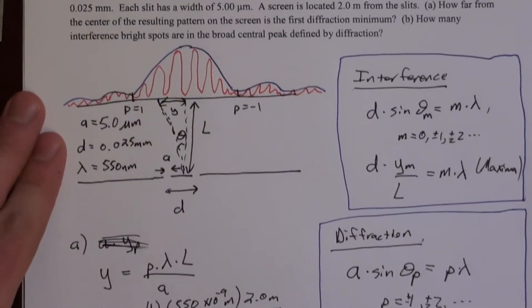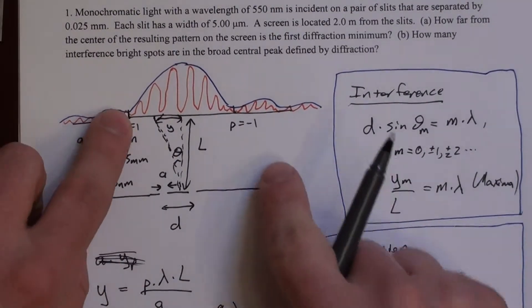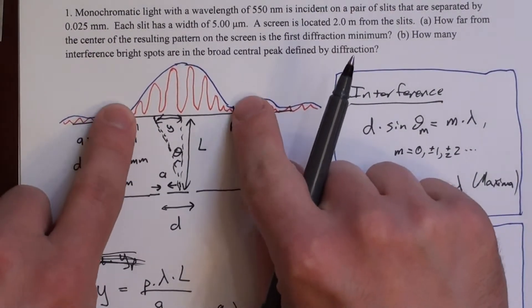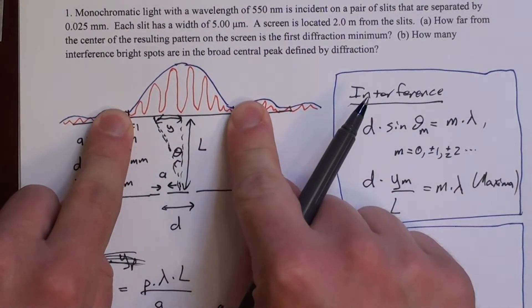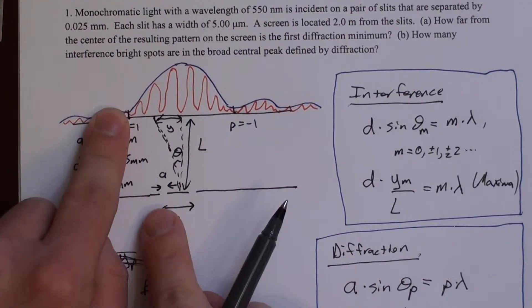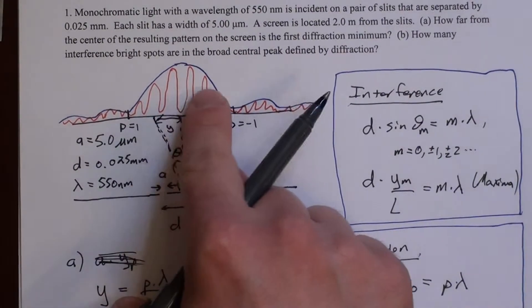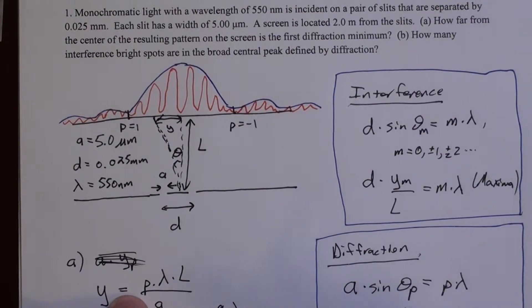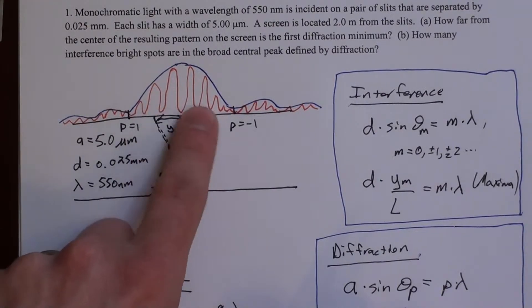Question B is, how many interference bright spots are in the broad central peak defined by diffraction? So what we're asking is, the broad central peak defined by diffraction, that's this large peak. And inside of that we have bright fringes due to interference. And that's not a fixed value, that changes with D. So we can imagine the same A, but a different varying D, for different sets of slits, and you would change how many of these are in here. So we want to know, for these specific dimensions, for A equals 5 microns and D equals 0.025 millimeters, how many fringes do we get inside?